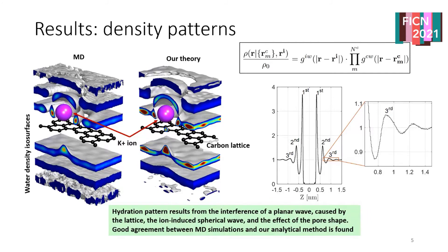Then we have a spherically symmetrical wave around the ion — a spherically symmetrical distribution. Finally, there is a contribution of the pore, from the atoms lacking in the lattice. You can see quite good agreement: we reproduce the layers, the first shell, the second hydration shell — which is very strongly fragmented. All these complex structures are captured quite well by our method, and we see quite good agreement.